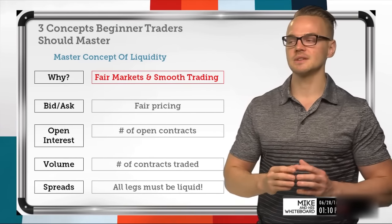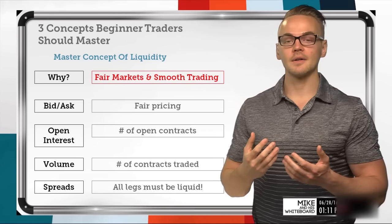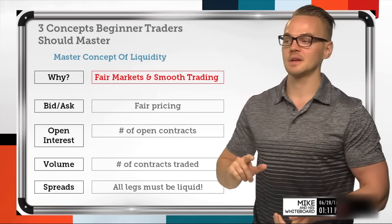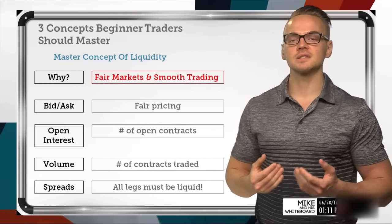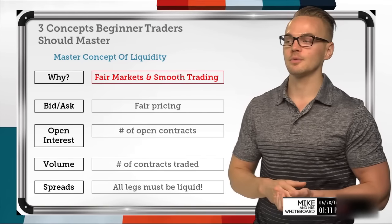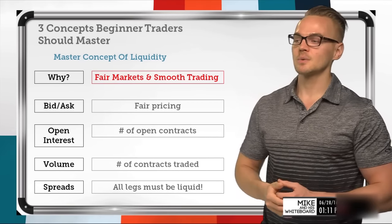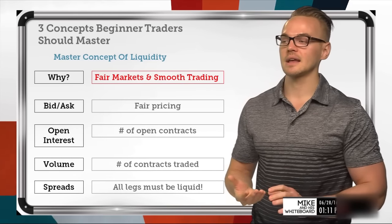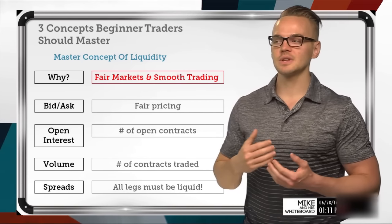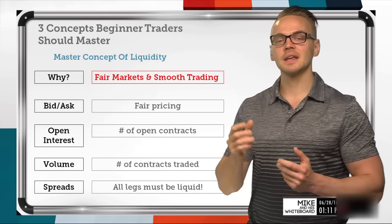Volume is very similar but slightly different. Volume gives us the number of contracts that actually traded throughout the day — if someone opened a contract that would be one tick on volume, and if someone closed it that would be another tick. Volume shows us the total transactions in that specific strike or underlying. We also have volume for shares traded per day, so there's share volume and option strike volume, while open interest is really just for the option.